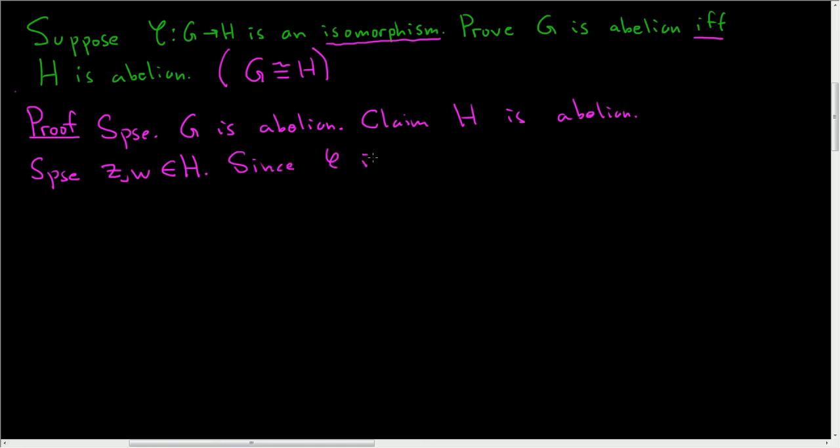we can find let's say A and B in G such that phi of A is equal to Z and phi of B is equal to W, and we just need to show that Z commutes with W and we're done. So then